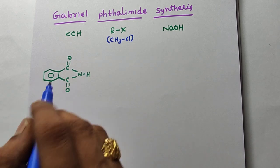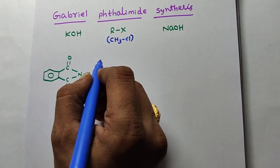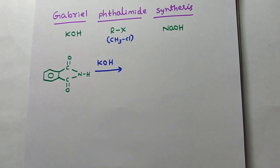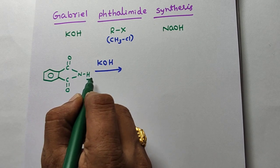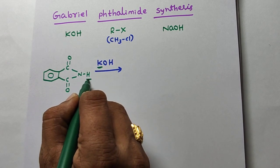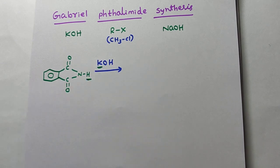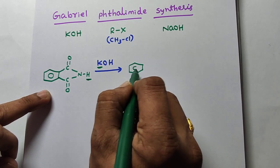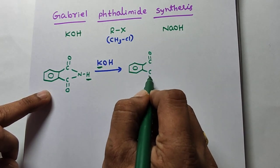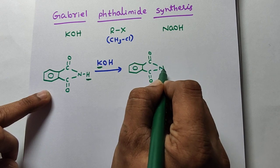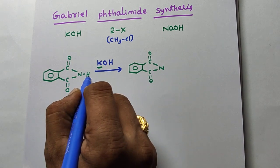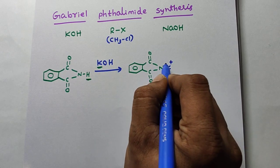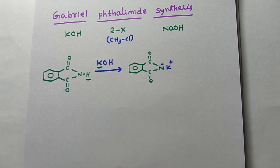Now it reacts with the first reagent, KOH. React with KOH — very simple. Here hydrogen is replaced by potassium. H⁺ is replaced by K⁺. So the product is: benzene ring, C double bond O, C double bond O, N–K. Potassium Phthalimide will be formed.